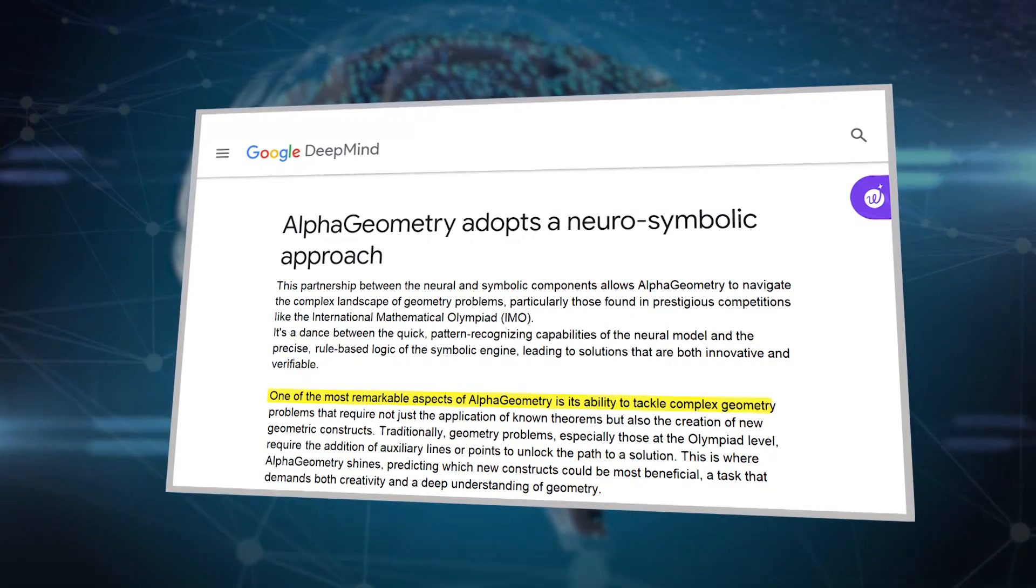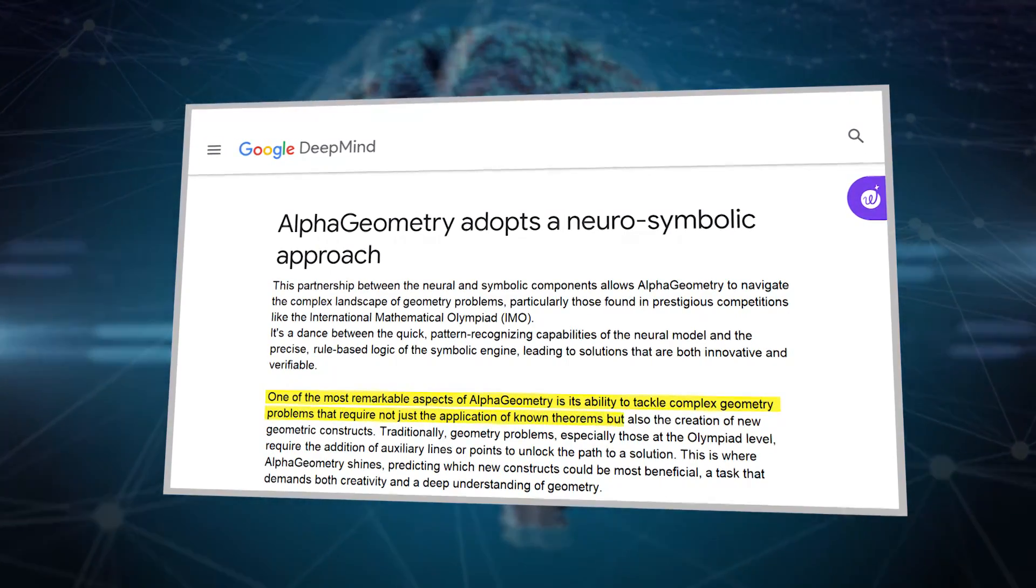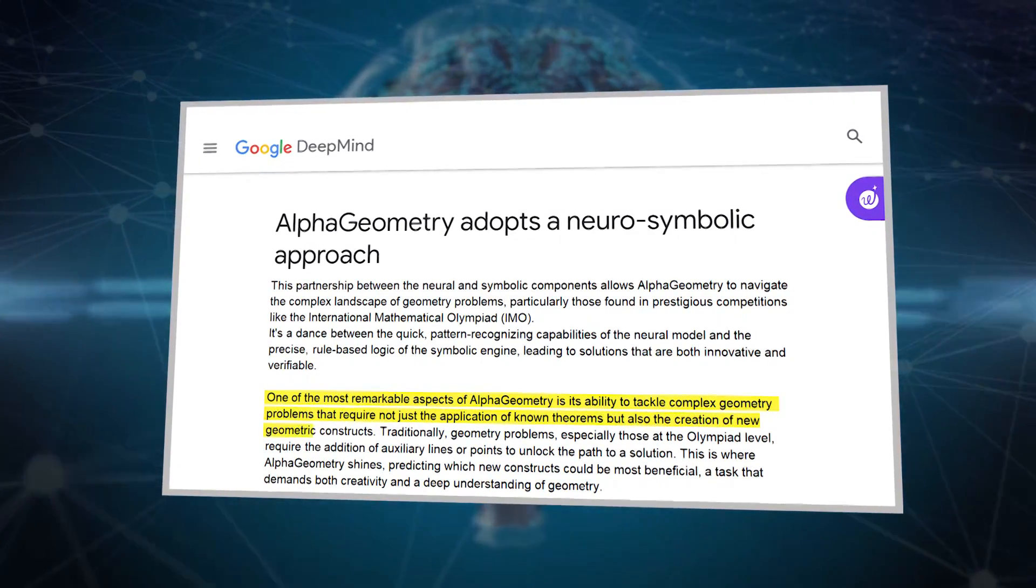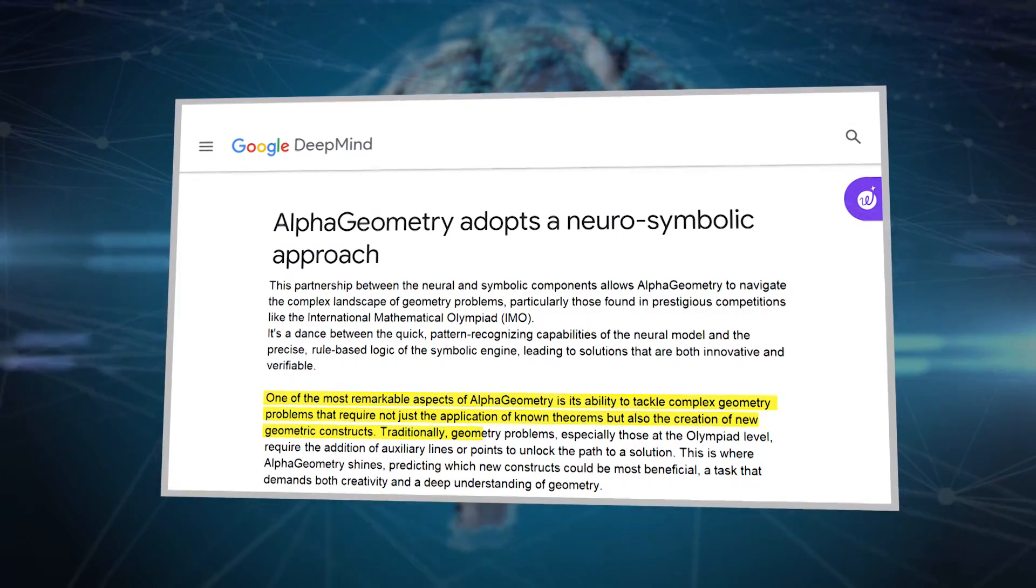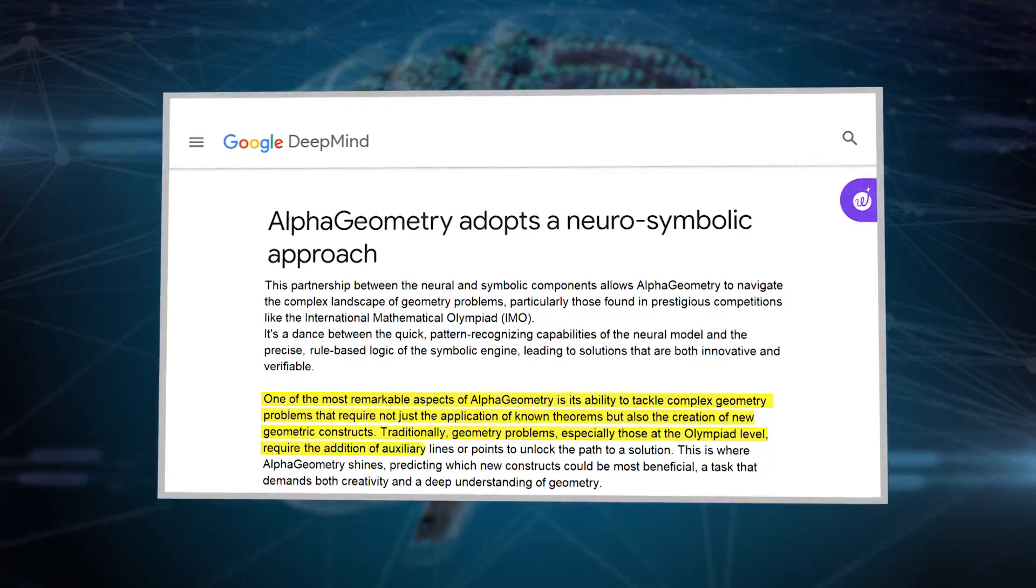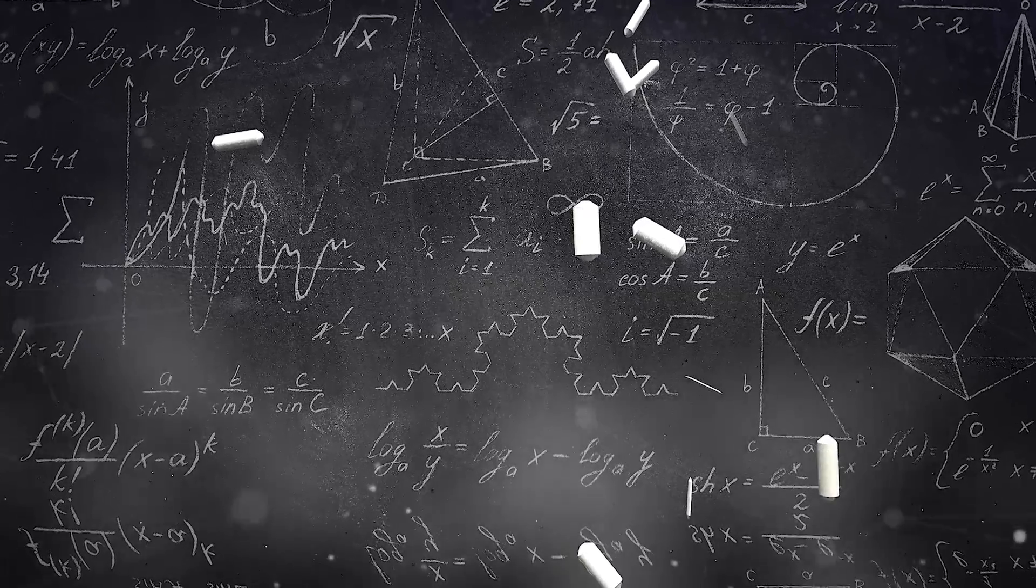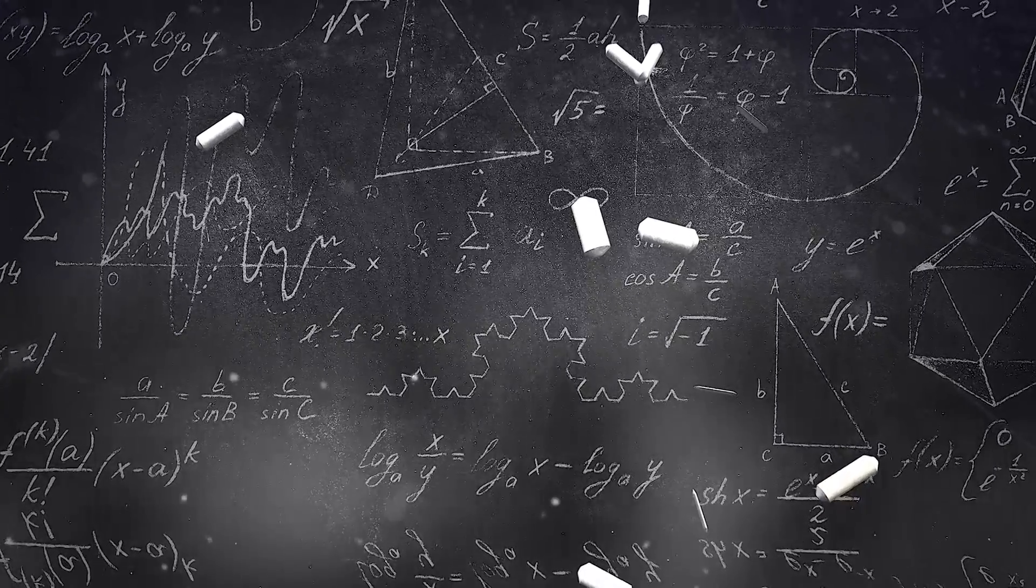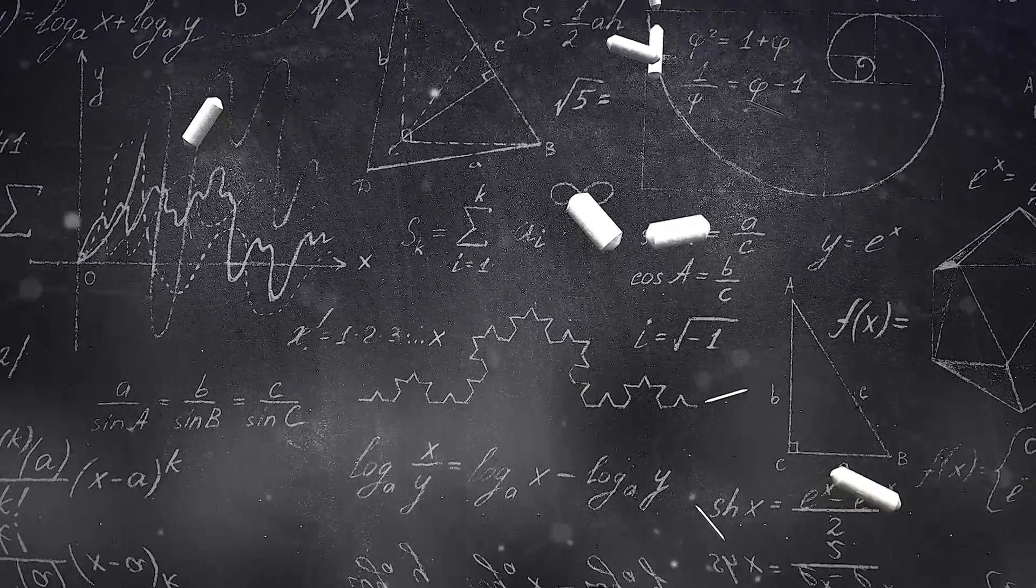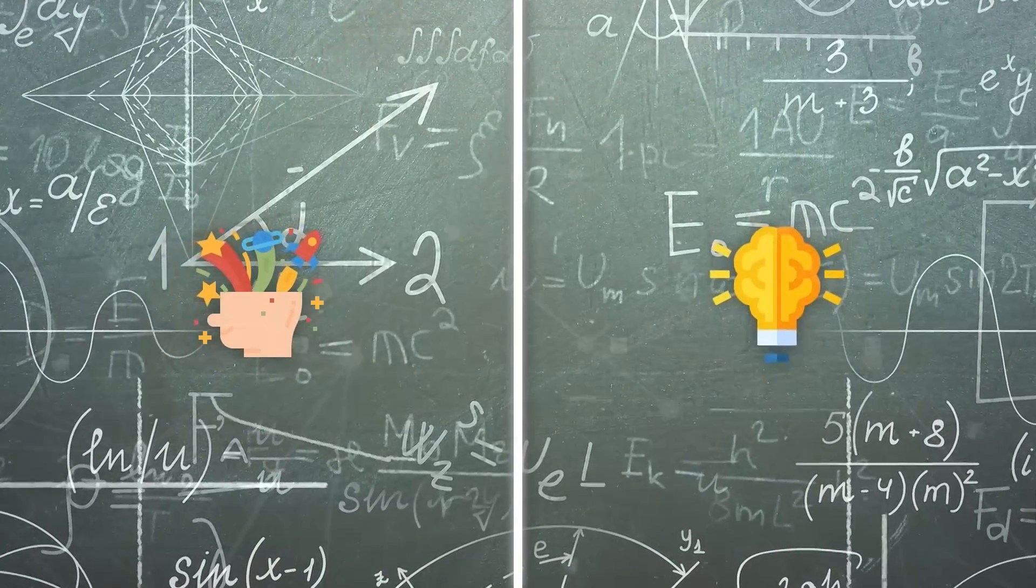One of the most remarkable aspects of Alpha Geometry is its ability to tackle complex geometry problems that require not just the application of known theorems, but also the creation of new geometric constructs. Traditionally, geometry problems, especially those at the Olympiad level, require the addition of auxiliary lines or points to unlock the path to a solution. This is where Alpha Geometry shines, predicting which new constructs could be most beneficial, a task that demands both creativity and a deep understanding of geometry.